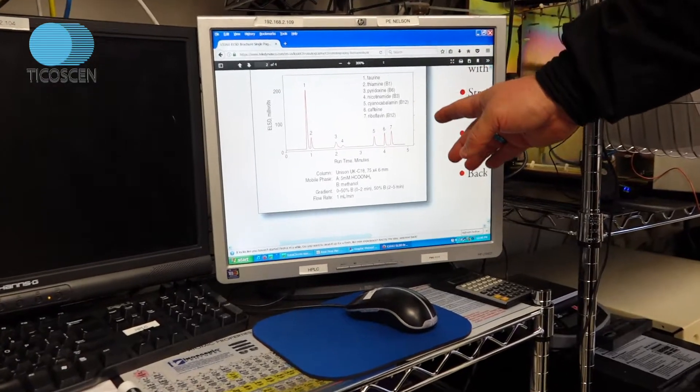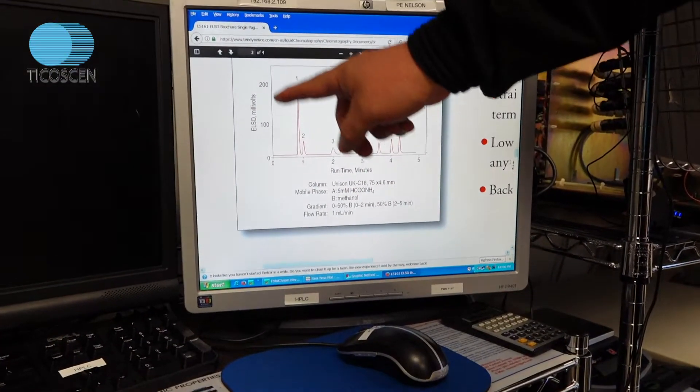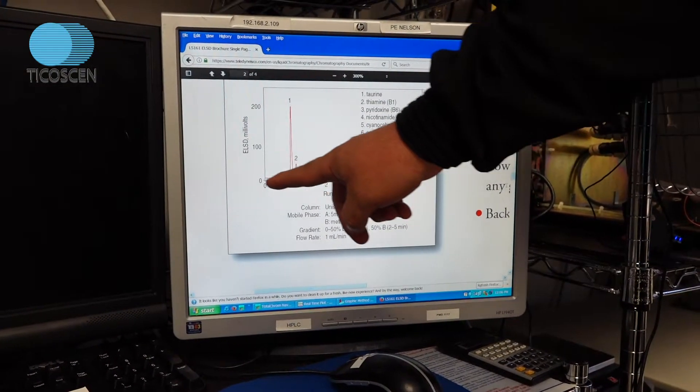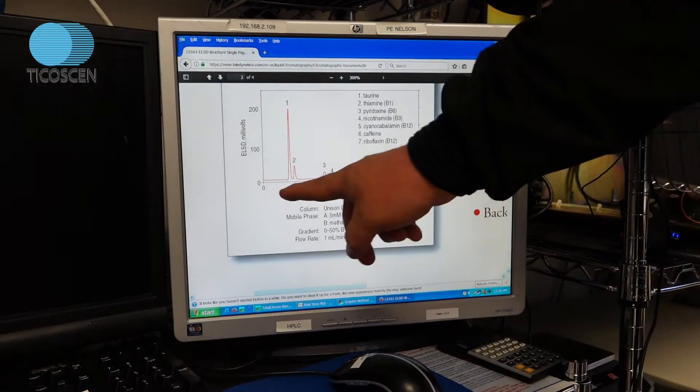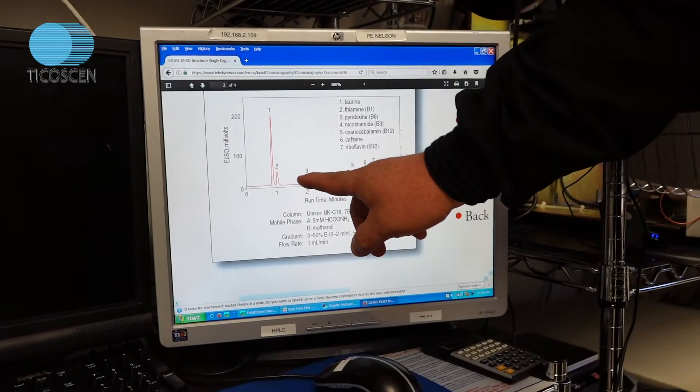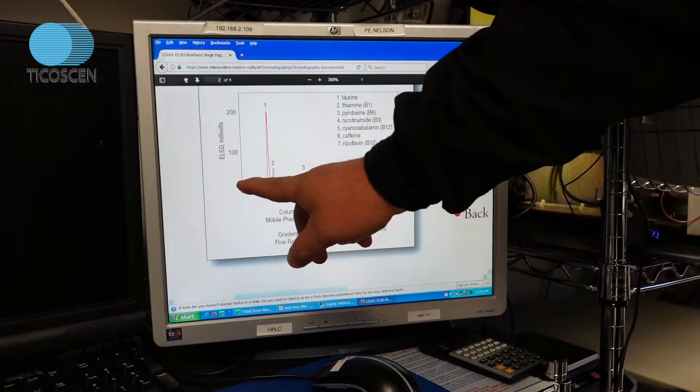Okay, this is an ELSD chromatograph in millivolts, 0 to 200 millivolts vertical scale. And here's your time, 0 to 5 minutes. And this is an example of one, two, three, four, seven component compound.